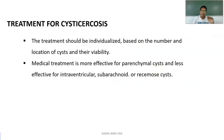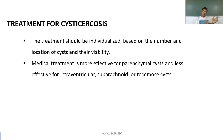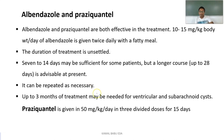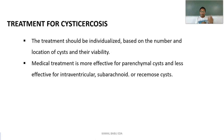For cysticercosis treatment, the approach depends on the individual case: the number of cysts formed and their viability determine the treatment modality. Medical treatment is more effective for parenchymal cysts and less effective for intraventricular, subarachnoid, and racemose cysts. Albendazole and praziquantel are both used. For intraventricular or subarachnoid cysts, praziquantel is given as 50 mg per kg body weight per day in 3 divided doses for 15 days.